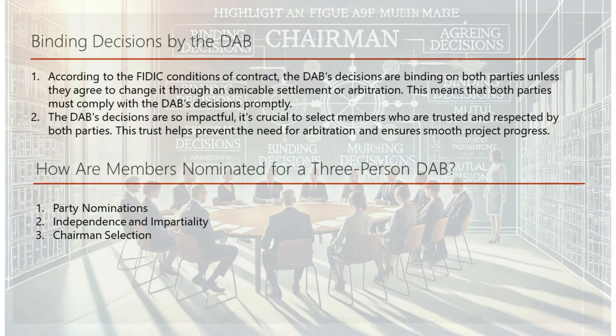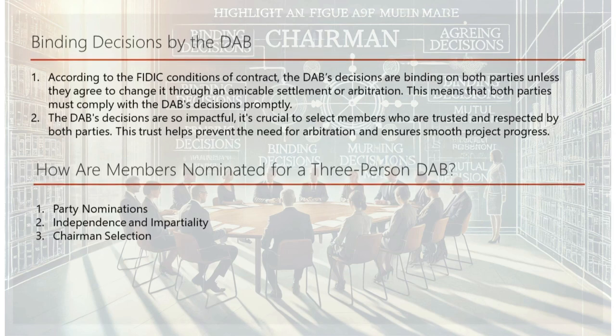Impartiality and the ability to collaborate are critical for the DAB's success. Once two members are chosen, they consult and agree on a third member to act as chairman. This can be challenging, so members might agree on a chairman among themselves before proposing that person to the parties for approval. The chairman's role is pivotal in guiding the board.